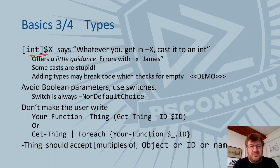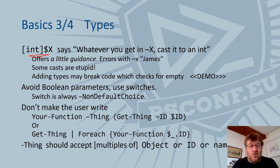Generally don't have Boolean parameters — use a switch parameter instead. A switch is always in the form of specifying the choice that isn't the default, so that no switch does the default thing. If you find you've written something that forces users to get an object by ID, or use ForEach every time the function runs, that's a sign your function is not flexible enough about what the input is for a particular parameter. It should accept multiples of the object, and it should accept an ID rather than requiring the full object.